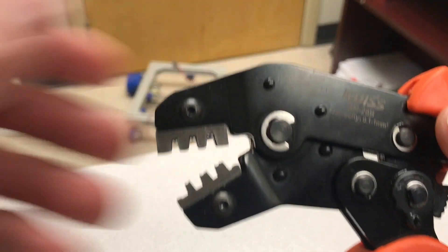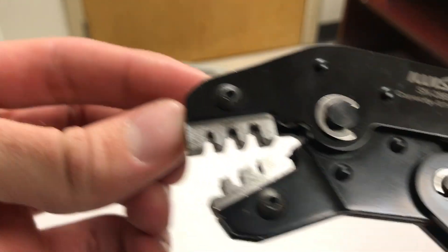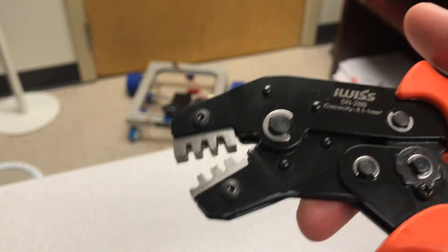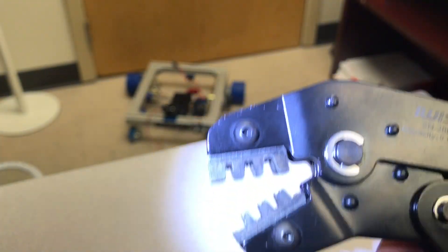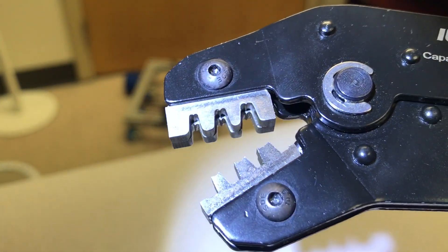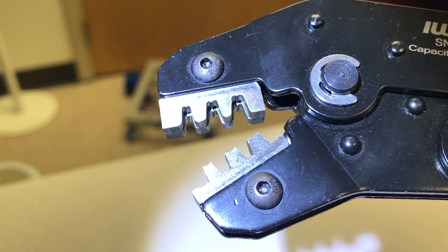The crimp connectors look like this. The proper crimper looks like this. For these connectors, you are going to use the very front die right here. And you will see that it has a shelf. It has two sections in the die.